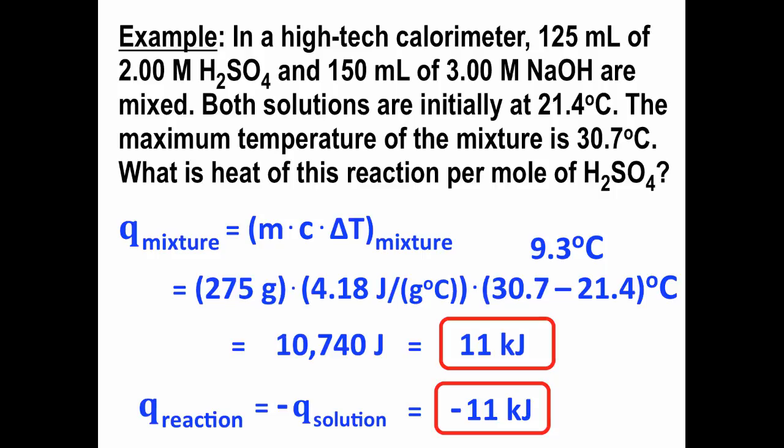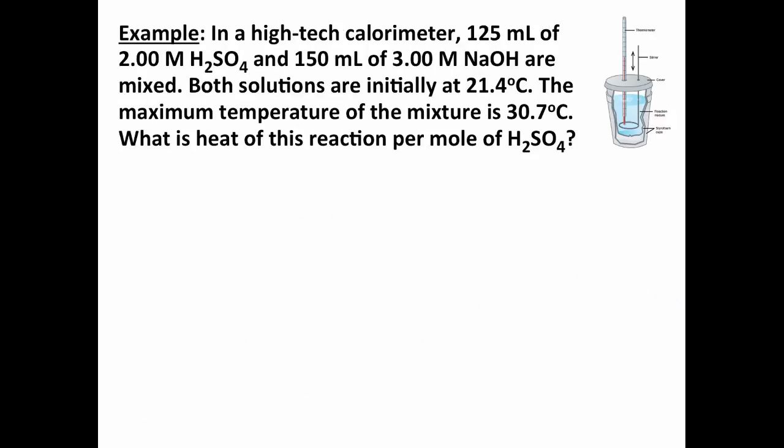Note, this is the amount of energy that the reaction gave off, but we want the heat of reaction per mole of sulfuric acid. So, what we need to do is see how much sulfuric acid we have, and also how much NaOH we have, and check to see if either one of those is the limiting reactant.